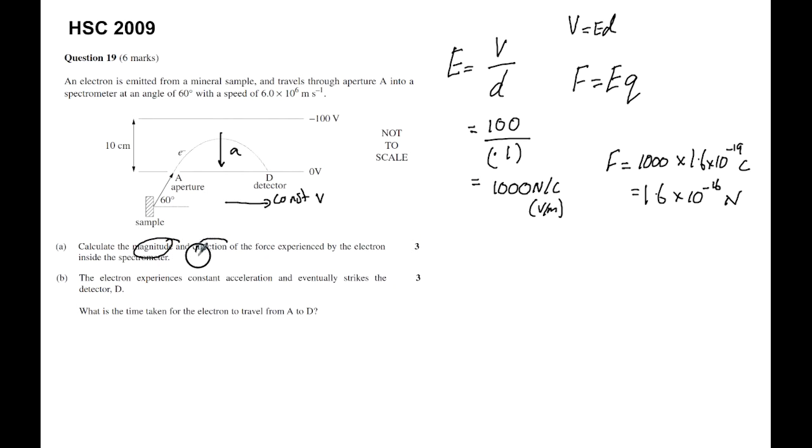Careful, you've got to read the question. It asks you the magnitude and the direction, so there's the magnitude and you need to identify the direction of the force. In this case, by an arrow or by saying down towards the zero voltage plate, and that will be okay to give you full three marks.